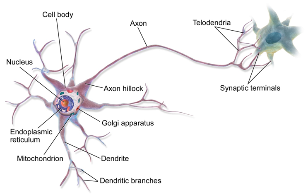Cholinergic neurons release acetylcholine from presynaptic neurons into the synaptic cleft. It acts as a ligand for both ligand-gated ion channels and metabotropic GPCRs (muscarinic receptors). Nicotinic receptors are pentameric ligand-gated ion channels composed of alpha and beta subunits that bind nicotine. Ligand binding opens the channel, causing influx of Na⁺, depolarization, and increases the probability of presynaptic neurotransmitter release. Acetylcholine is synthesized from choline and acetyl-coenzyme A.